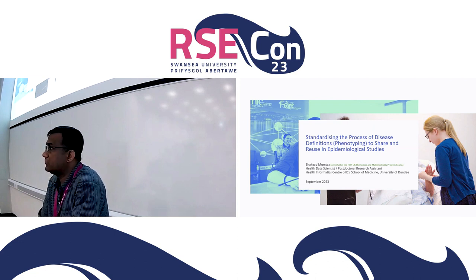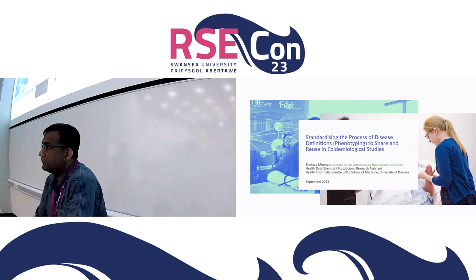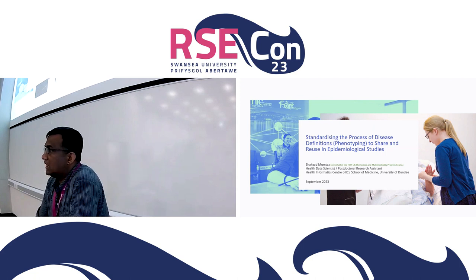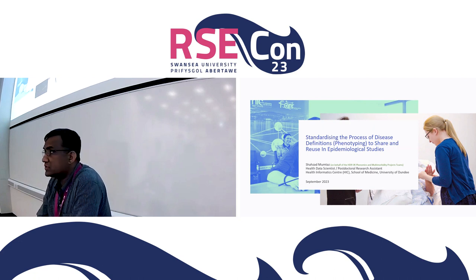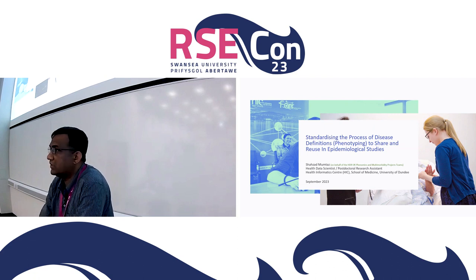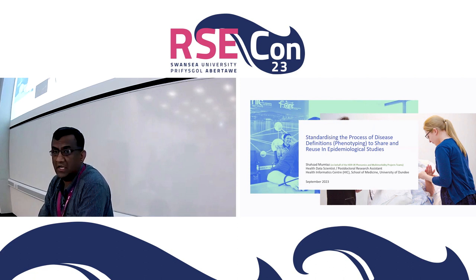This talk covers two projects we have worked on over the last couple of years. The first is the development of the HDR UK phenotype library, a collaborative project across seven institutes across the UK, including University College London, King's College London, York Bioinformatics Institute, University of Oxford, University of Birmingham, Swansea University, and University of Dundee. The second component is the multi-morbidity informatics tool, a collaborative project between University of Dundee and University of Edinburgh.